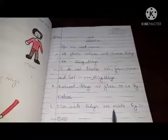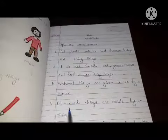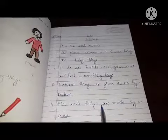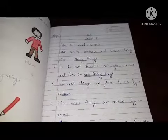Fourth one is: man-made things are made by what? Man-made things hain, man-made things kaun banata hain? By man.